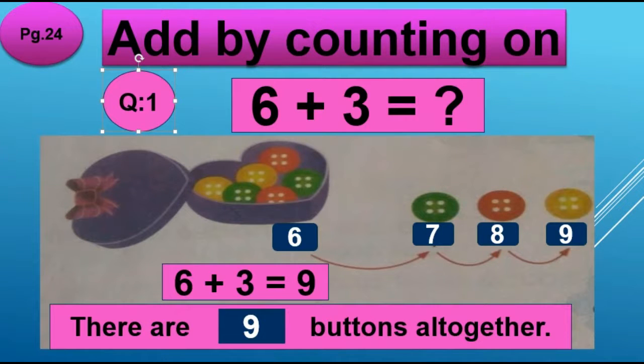So how we count on? Let's start again. Total number of buttons are 6. What comes next to 7. What comes next to 8? What comes next to 9? Very good. So 6 plus 3 equals 9. There are 9 buttons all together.